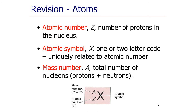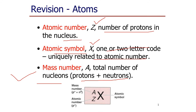For revision: atomic number Z represents the number of protons present in the nucleus. The atomic symbol is a one- or two-letter code uniquely related to the atomic number. The mass number A is the total number of nucleons — protons plus neutrons. So atomic number includes only protons, while mass number includes protons as well as neutrons. For any element X, A is the mass number written on top and Z is the atomic number written at the bottom.